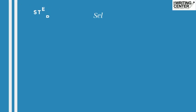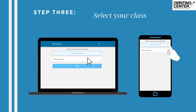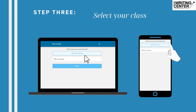Step 3: Select the class you would like help with. If your class is not listed, you may find it through the Edit Your Classes option. If you can't find your class on Penji, or you need writing assistance with a scholarship or resume, simply select Writing.